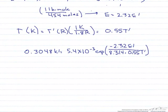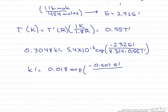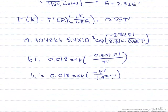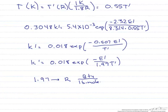When we simplify this, we come up with k prime equals 0.018 exponential of minus 0.507 E prime divided by T prime. Or we can write this as k prime equals 0.018 exponential of minus E prime divided by 1.97 T prime. And why might we want to write it that way? As it turns out, 1.97 is the gas constant in units of BTU per pound mole Rankine.